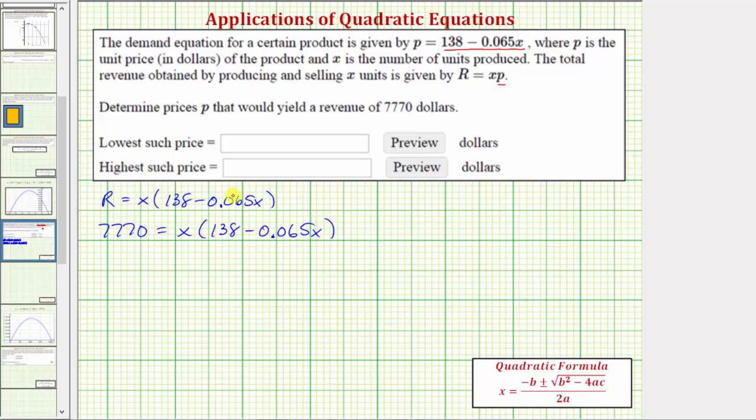For our first step in our equation let's distribute x. So we have 7,770 equals, let's write the x squared term first, so negative 0.065x squared plus 138x. Because we have a quadratic equation let's set it equal to zero. So we'll subtract 7,770 on both sides of the equation. So now we have zero equals negative 0.065x squared plus 138x minus 7,770.